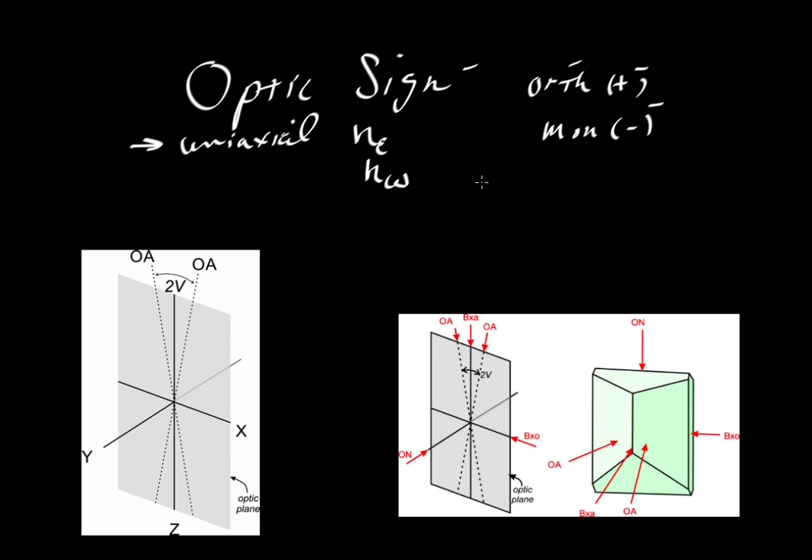If omega happens to be greater than epsilon, then we say the mineral is positive. So if omega is greater than epsilon—here we mean the index of refraction—that means this is the slow ray. Remember, big N means slow velocity.